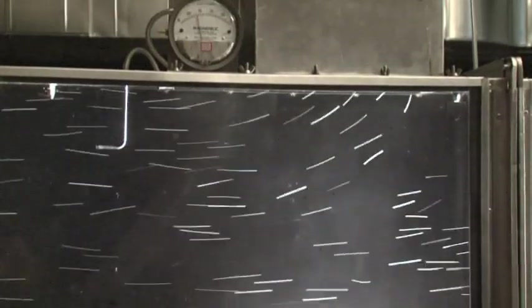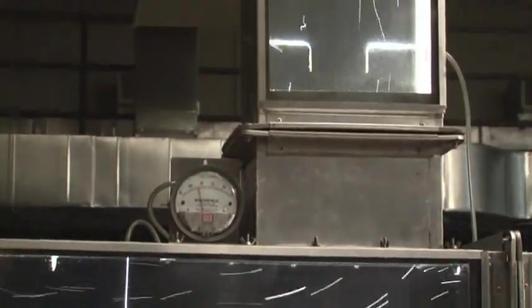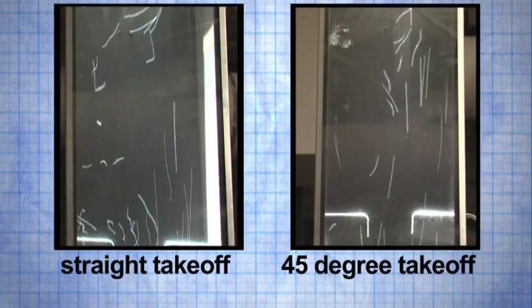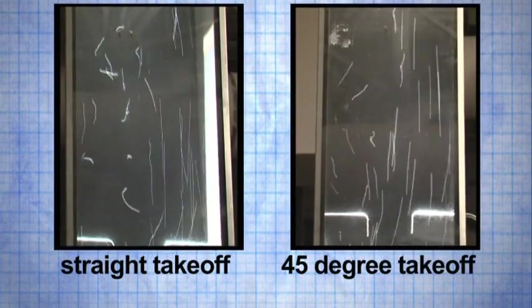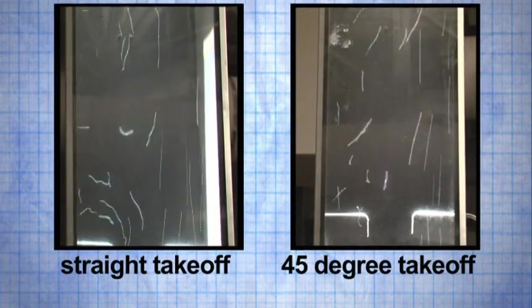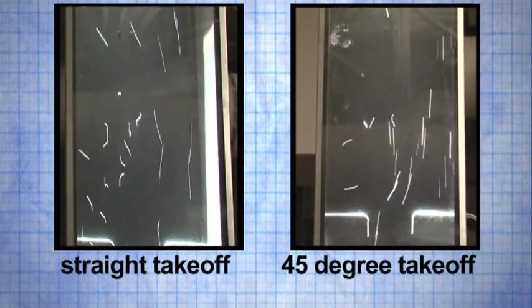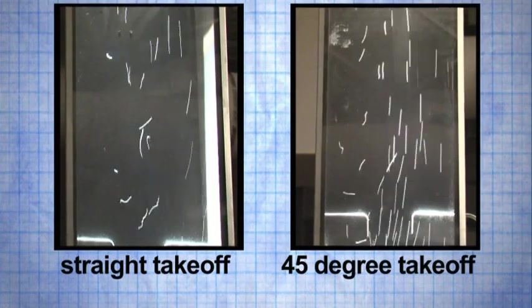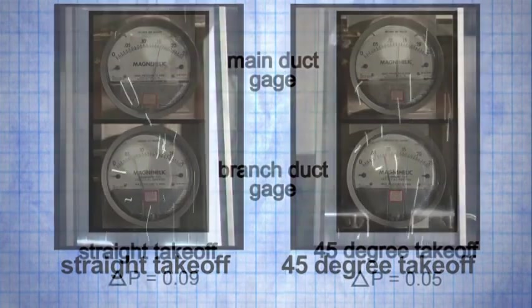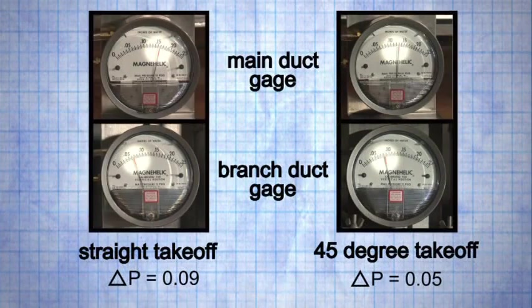This shows the airflow path up a branch duct that has a straight takeoff fitting. More turbulence is noticeable up the branch, but it can be better observed when the two views are placed simultaneously side by side. Using this viewing aid, the more turbulent airflow is clearly visible compared to the better flow provided by the 45-degree takeoff due to the angled lead-in from the main to the branch duct. Again, more turbulence equates to higher overall duct pressure loss.